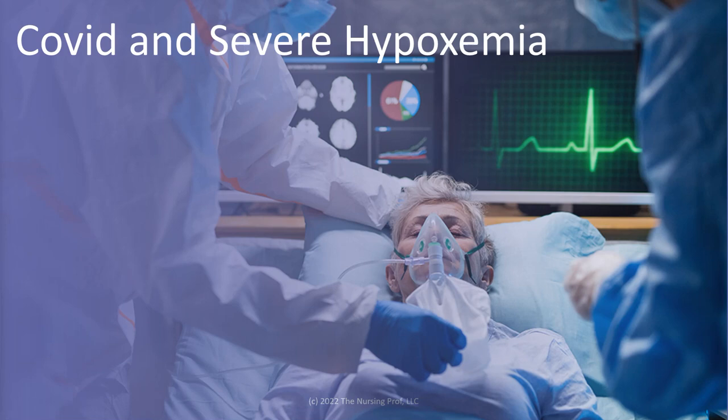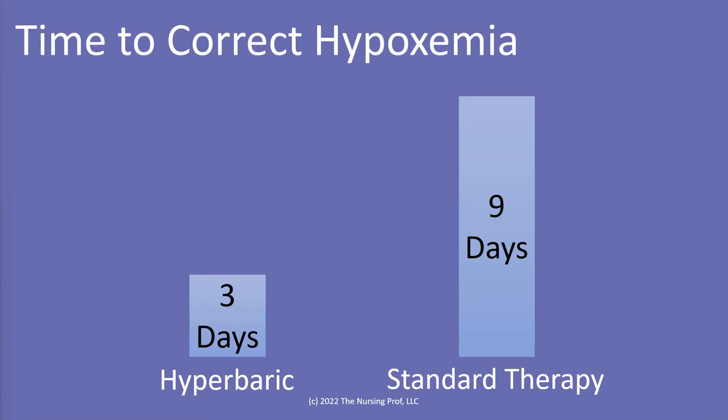Where we've heard a lot about hyperbaric oxygen therapy lately is with COVID and severe hypoxemia. In patients who had COVID with severe hypoxemia, we looked for ways to increase the amount of oxygen available. Hyperbaric oxygen therapy was suggested as a method for treating severe hypoxemia in these patients. In one study, the time to correct hypoxemia went from nine days with standard oxygen therapy or intubation down to three days with hyperbaric oxygen therapy.